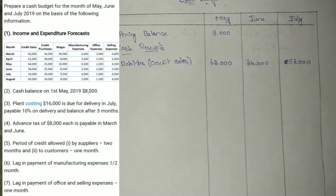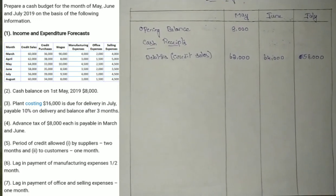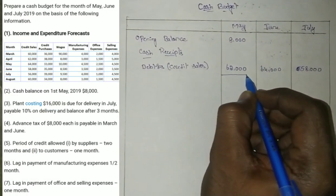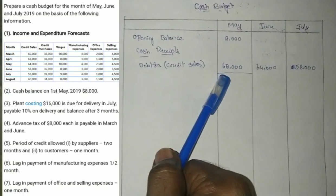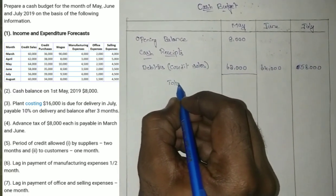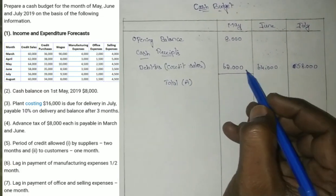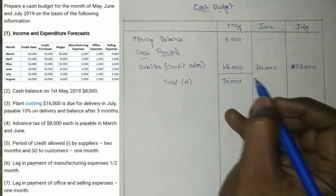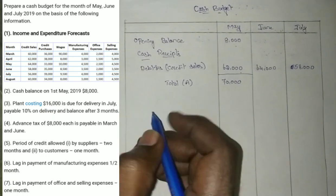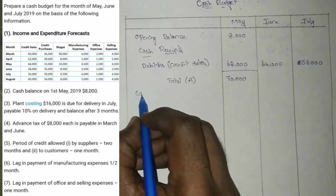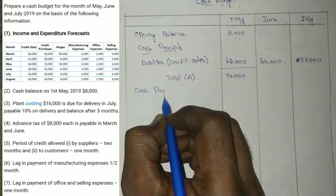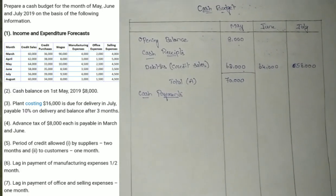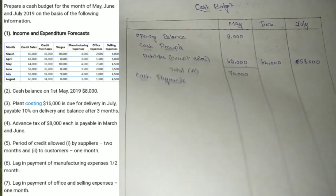We have no other receipts in this problem. So the total of receipts for May is the opening balance plus debtors: 62,000 plus 8,000 equals 70,000. This total is carried forward as total A. Now we move on to recording cash payments.